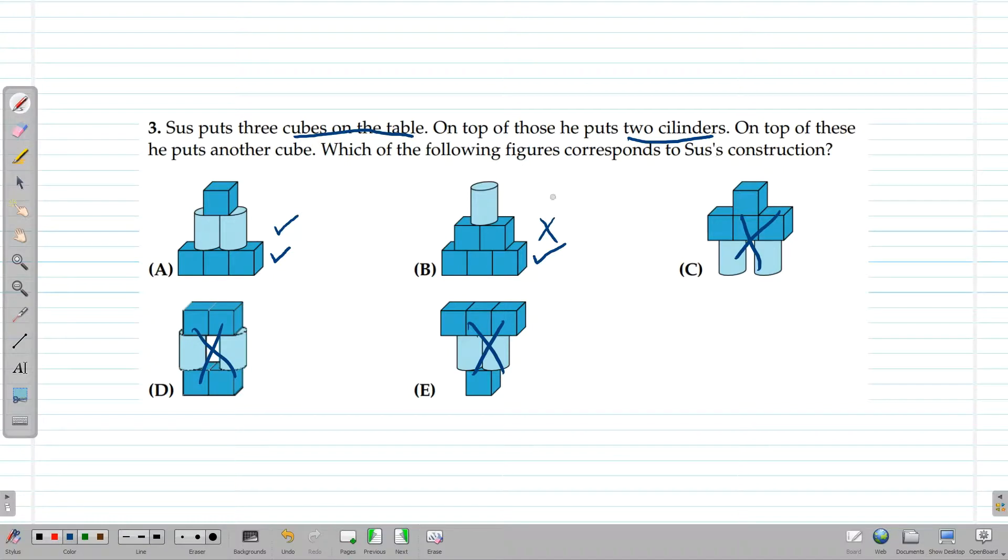The third thing is that he puts another cube on the figure. In figure A, we can see that there is a cube on the 2 cylinders, so this could be an answer. But in figure B, it doesn't match, so this could not be an answer. So the correct answer is A because it corresponds to Sus's construction.